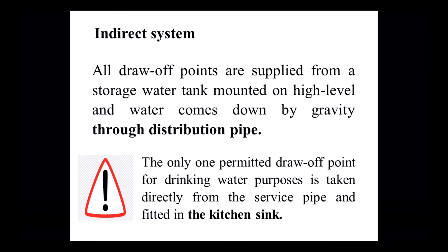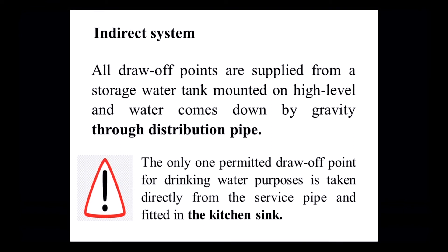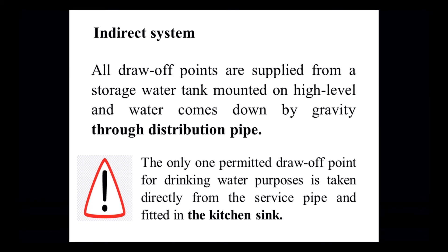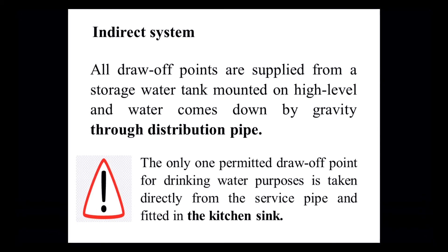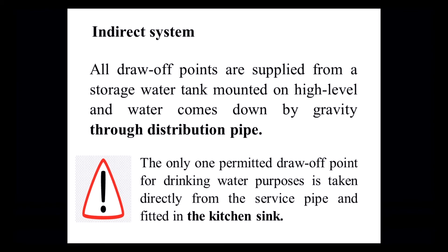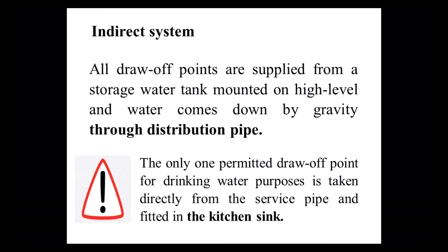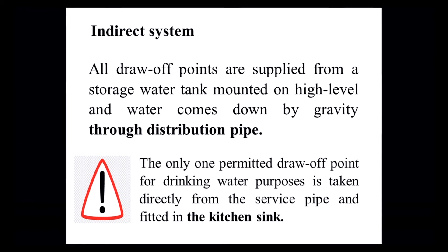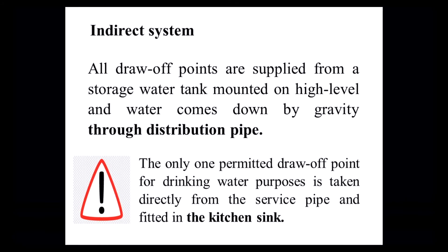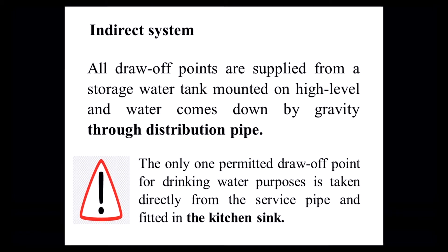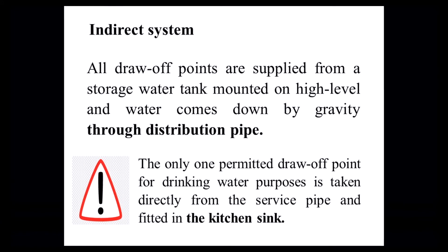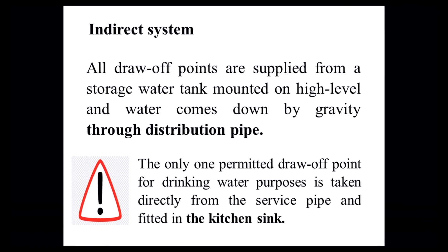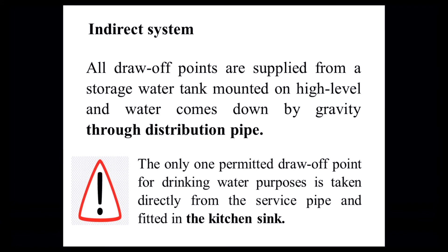The diagram of the indirect system shows how it works. The one permitted draw point for drinking water purposes is taken directly from the service pipe and is fitted on the kitchen sink.